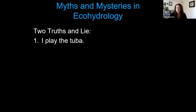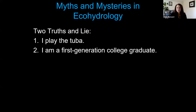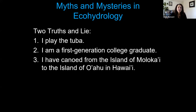Here are the three statements — one of these is a lie. Number one: I play the tuba. Number two: I'm a first-generation college graduate student. Or number three: I've canoed from the island of Molokai to the island of Oahu in Hawaii.